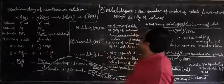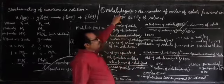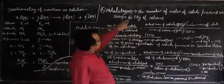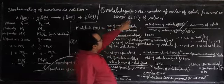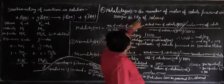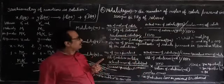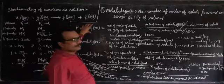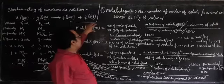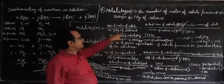Now we will discuss molality. Molality is the number of moles of the solute present in one kilogram (1000 g) of solvent. Here, the number of moles are compared with the mass of the solvent, not the solution. Mathematically, molality is indicated by the symbol small m, and the formula is: number of moles of solute divided by number of kg of solvent.